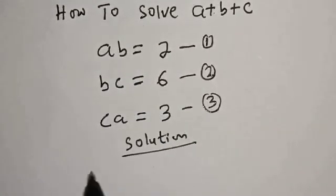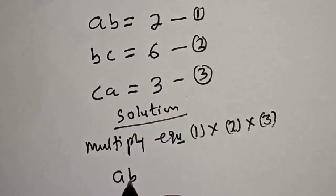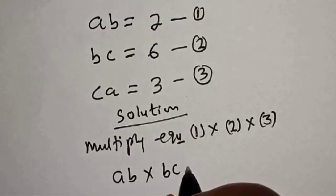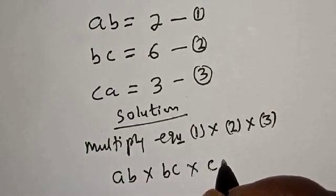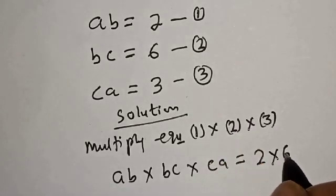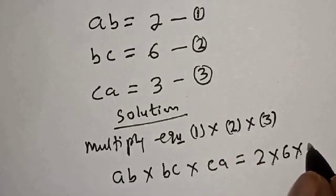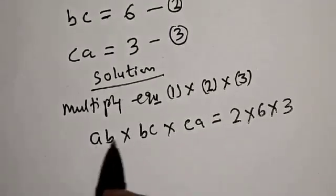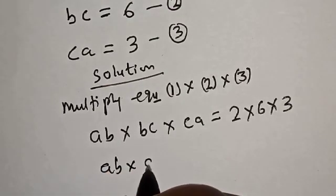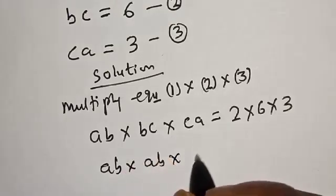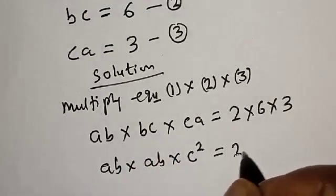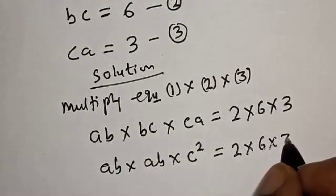Let's multiply equation 1 by equation 2 by equation 3. So ab multiplied by bc multiplied by ca is equal to 2 multiplied by 6 multiplied by 3. This gives us a squared, b squared, c squared equal to 2 times 6 times 3.